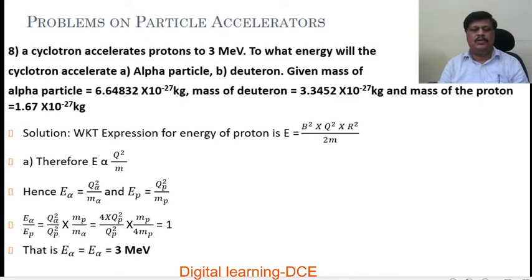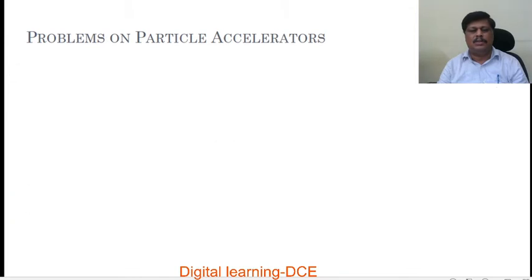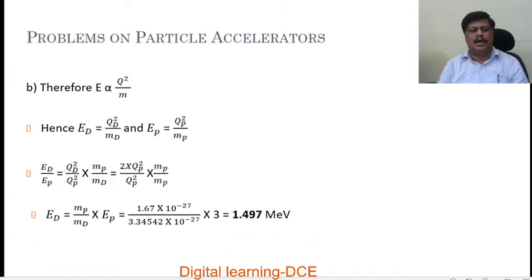That value of 3 MeV is confirmed. By substituting the actual mass values of the alpha particle and the proton, we get nearly the same value. Next, for the deuteron part: we again use energy proportional to Q squared by M. Hence energy of the deuteron equals Qd squared by Md, and energy of the proton equals Qp squared by Mp. Dividing: Ed by Ep equals Qd squared by Qp squared into Mp by Md.